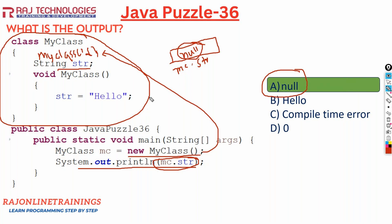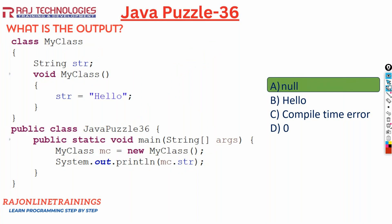To recap: whenever a class is created with no constructor inside it, a default constructor will be created automatically. When we use a return type void for a method whose name is same as the class name, it is not considered a constructor at all - it becomes an ordinary method that must be invoked explicitly. That's the concept. More about constructors in further puzzles. Please subscribe, like and share.